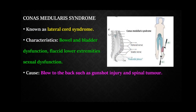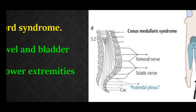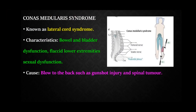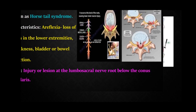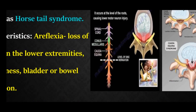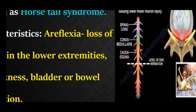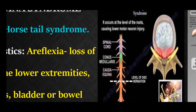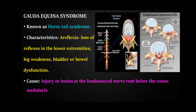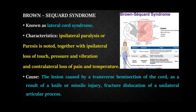Conus medullaris syndrome — also referred to by the speaker as lateral cord syndrome — has main characteristic features of bowel and bladder dysfunction, flaccid lower extremities, and sexual dysfunction. It may be caused by a blow to the back such as a gunshot injury or a spinal tumor. Cauda equina syndrome, also known as horse tail syndrome, is characterized by areflexia in the lower extremity, leg weakness, and bladder and bowel dysfunction. It is mainly caused by a lesion in the lumbosacral area below the conus medullaris.